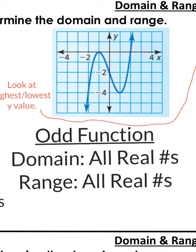This is an odd function because it's going in opposite directions. So the domain is all real numbers. The range is all real numbers.